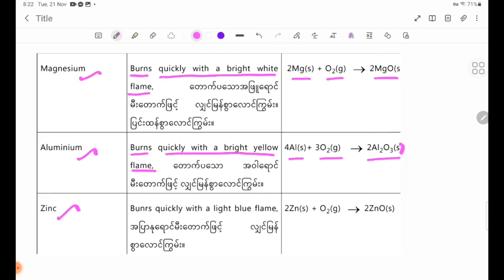Zinc burns quickly with a light blue flame. The reaction is: 2Zn(s) + O2(g) → 2ZnO(s), producing zinc oxide.